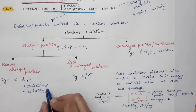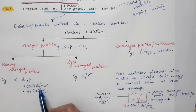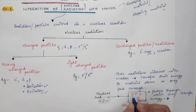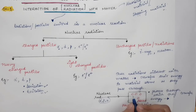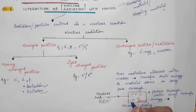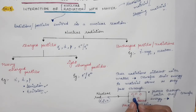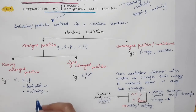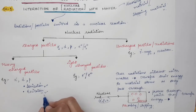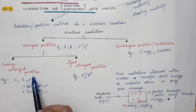By ionization, we mean that these particles knock out the orbital electrons — the electrons revolving around the atoms of the material medium. When these nuclear radiations enter, they knock out the outer orbital electrons of the atoms. That process is the ionization process.